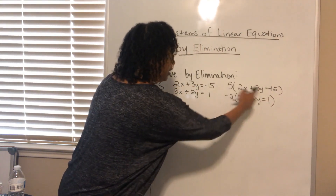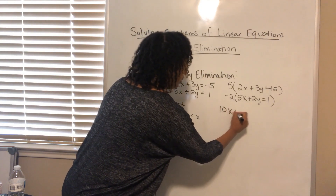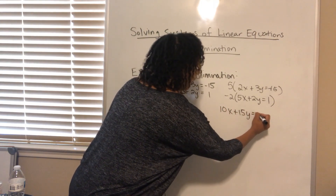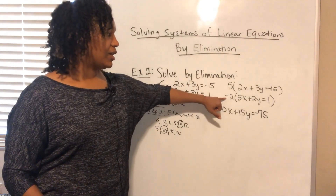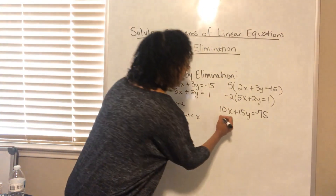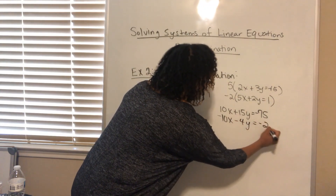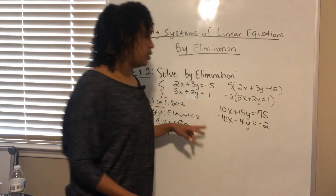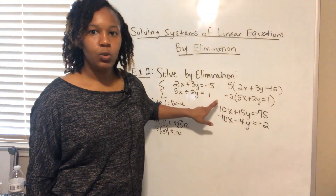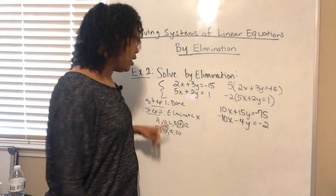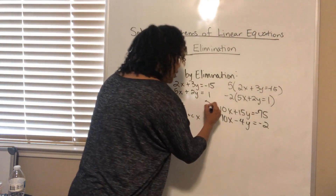Multiplying the first equation by 5 gives 10x plus 15y equals negative 75. Multiplying the second equation by negative 2 gives negative 10x minus 4y equals negative 2. Now the x's have the same coefficient where one is positive and one is negative. That completes step two.